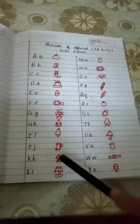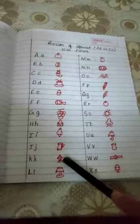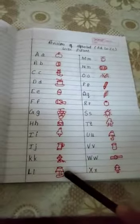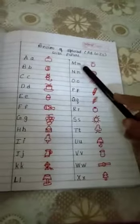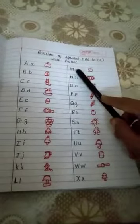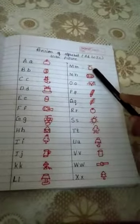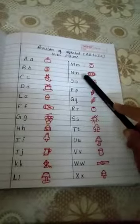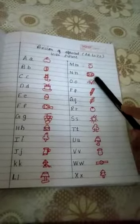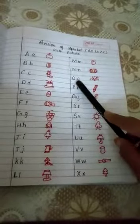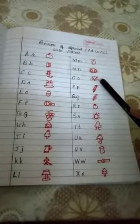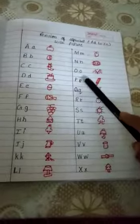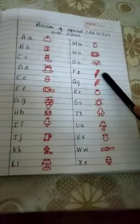K for Kite, L for Lamp, M for Mango, N for Nest, O for Owl, P for Pencil.